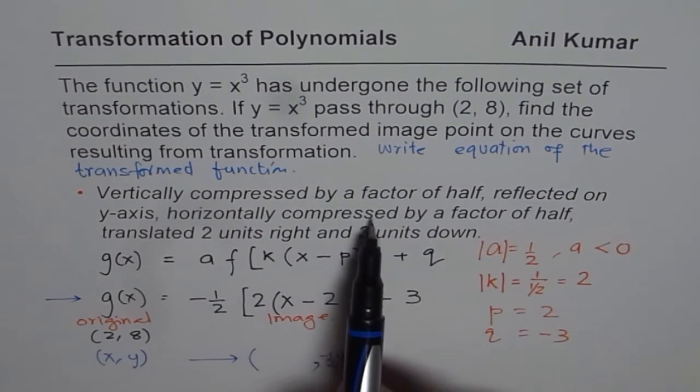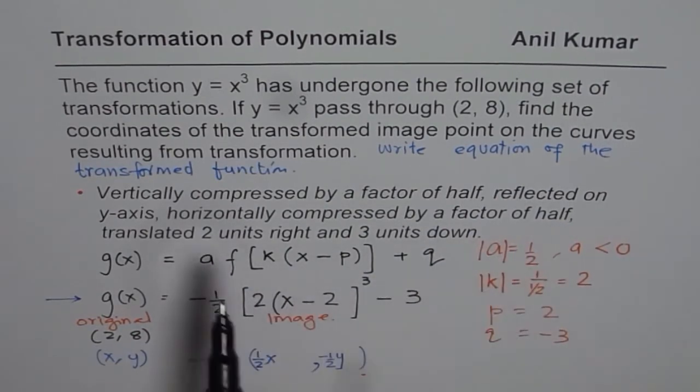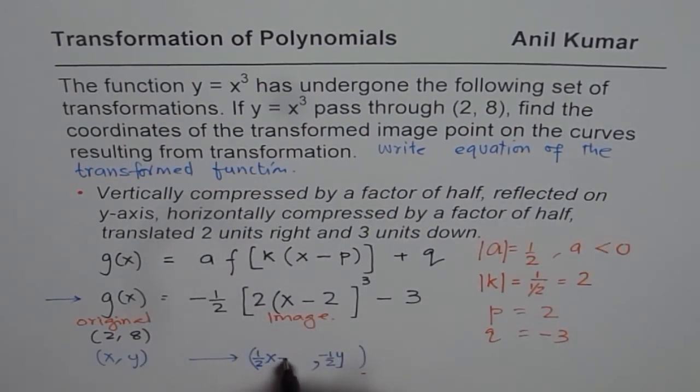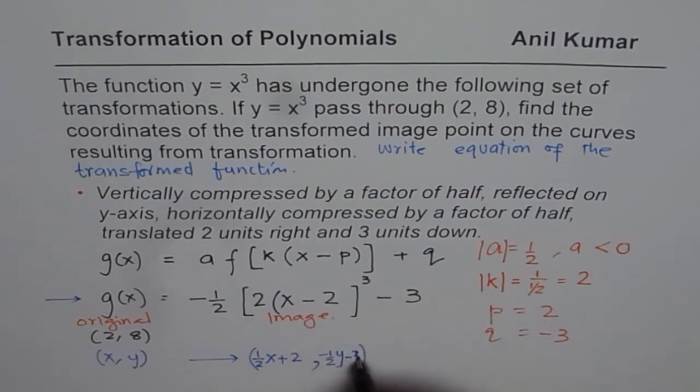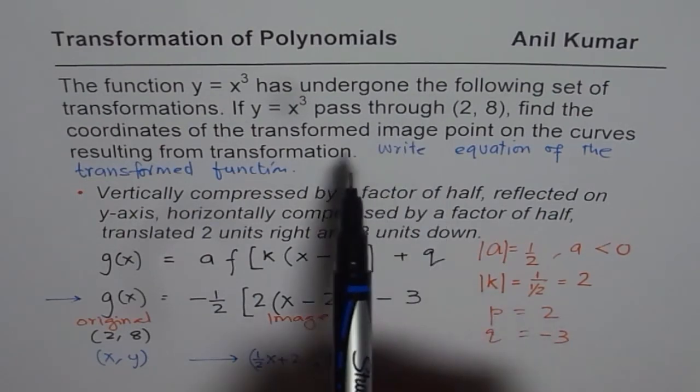Horizontally compressed by a factor of half. That means horizontally you are smaller distance away. So we get half of x value. And then we look into translations. Translate two units right. So when you move two units right, it should be plus two. And three units down means minus three for y. So that is how you get your transformed points.